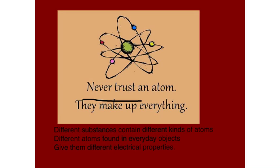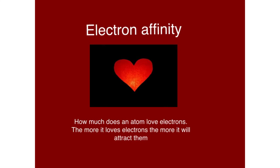We know that different substances contain different kinds of atoms, and those different atoms give those substances different electrical properties. One very important electrical property is called electron affinity. We can think of that as how much does the atom love electrons? The more it loves electrons, the more it will be able to attract them.